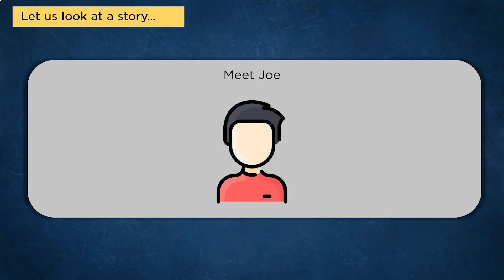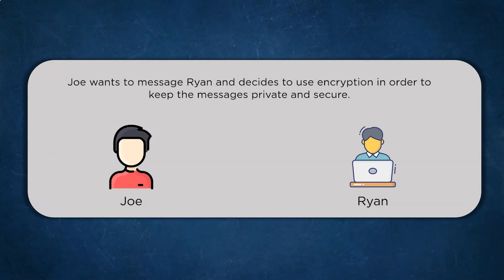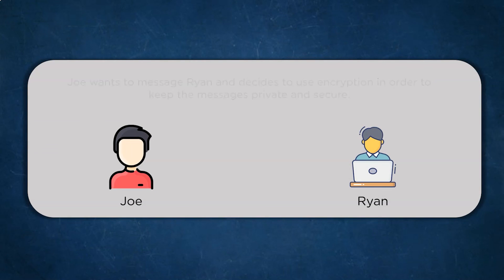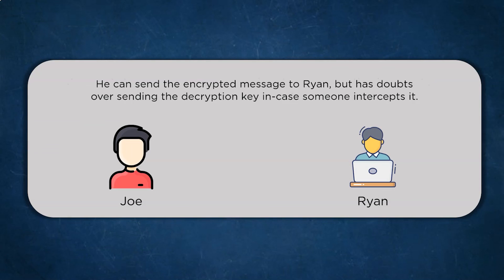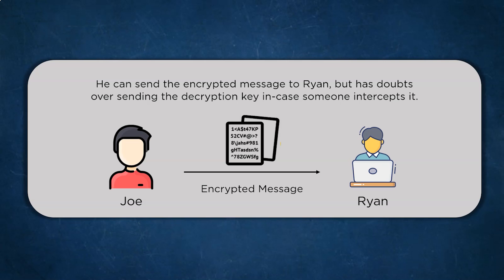Let's meet Joe. Joe is a journalist who needs to communicate with Ryan via long-distance messaging. Due to the critical nature of the information, people are waiting for any message to leave Joe's house so that they can intercept it. Joe can easily use symmetric key cryptography to send the encrypted data so that even if someone intercepts the message, they cannot understand what it says. But here's the tricky part.